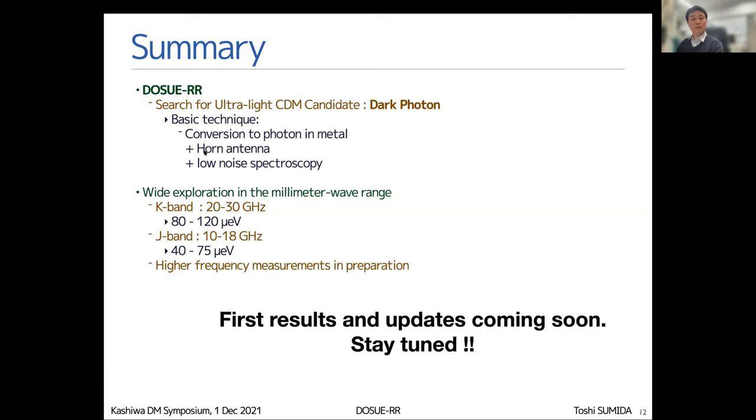The dark photon is converted to photons at the metal and detected by an antenna with very low noise. We plan some experiments for different mass range frequency ranges. The first results and some updates will be coming very soon. Please stay tuned. Thank you very much.